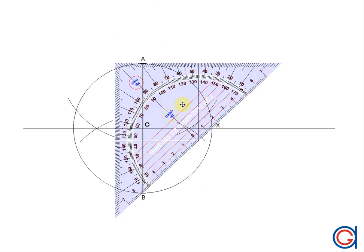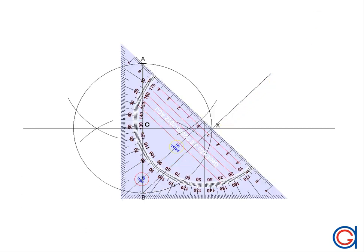So now we will draw a straight line from point B through point X and elongate it as shown here. Again, we will repeat this process starting at point A through point X and elongate it.